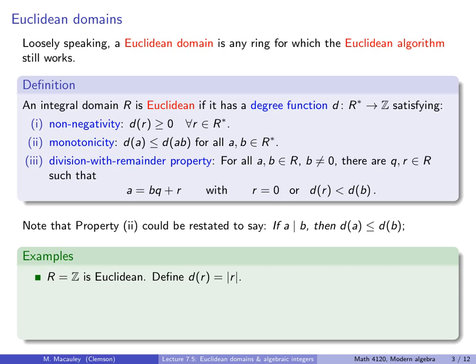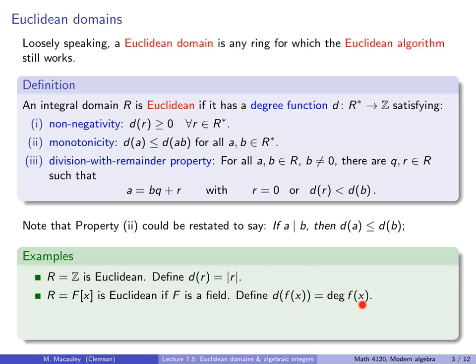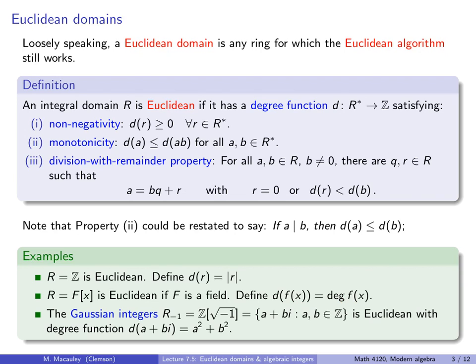Let's do some examples. The most basic one is the integers, which is Euclidean, and you can define the degree function to just be the absolute value. Next, any polynomial ring over a field in one variable is Euclidean, and you can take the degree function of a polynomial to be the standard degree — the highest power of X that appears in it. Finally, I want to introduce the Gaussian integers, which is the set of complex numbers of the form A plus B·i, where A and B are integers.